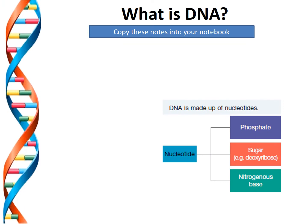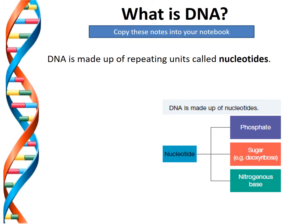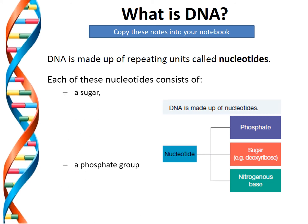So what is DNA? DNA is made up of repeating units called nucleotides. Each of these nucleotides consists of a sugar, a phosphate group, and a nitrogenous base.